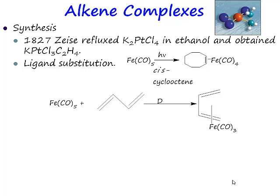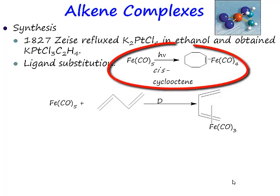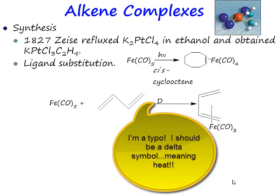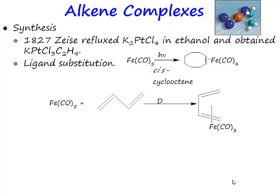How do we make these complexes? You can irradiate your iron pentacarbonyl, knock off one of the carbonyl ligands, and coordinate a cyclooctadiene molecule. You can do something similar with a diene — this is butadiene, which is a soluble gas. So when you take butadiene and iron pentacarbonyl and heat it up, you kick out two of the CO ligands and substitute a diene.